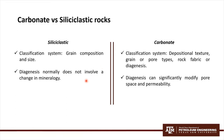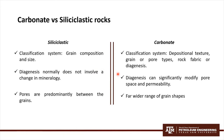In siliciclastic rocks, diagenesis normally does not involve a change in mineralogy. However, diagenesis in carbonate rocks can significantly modify pore space, mineralogy, and permeability. Finally, pores in siliciclastic rocks are predominantly between the grains, while for carbonates, a far wider range of pore types are observed.